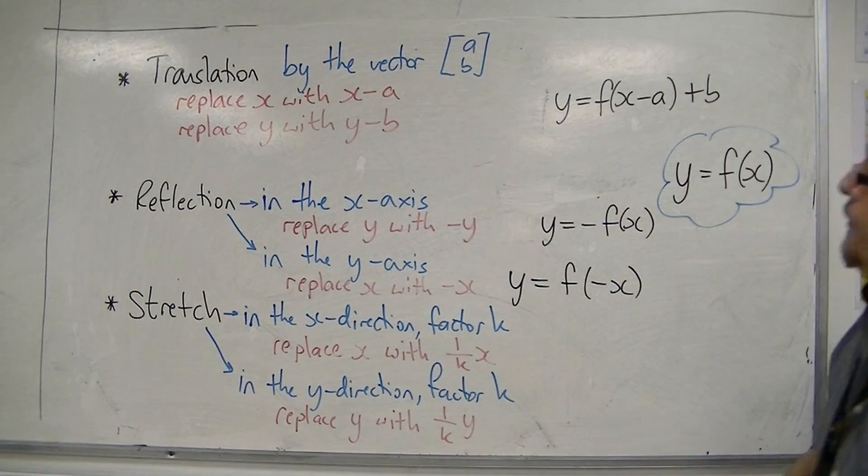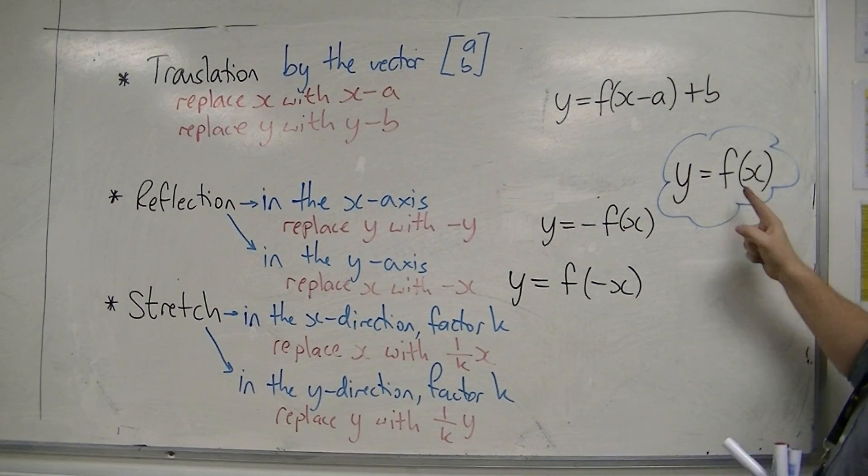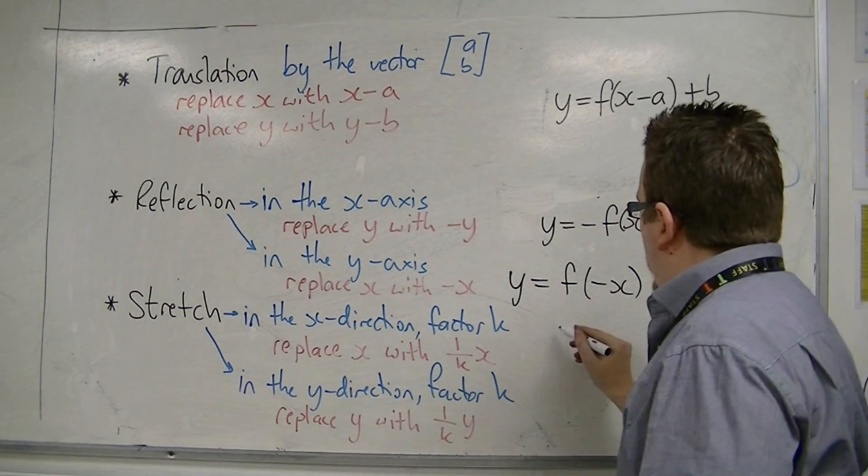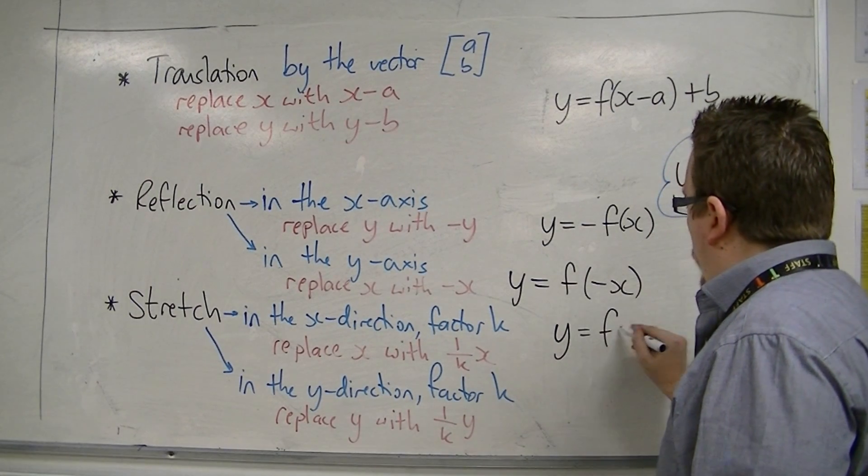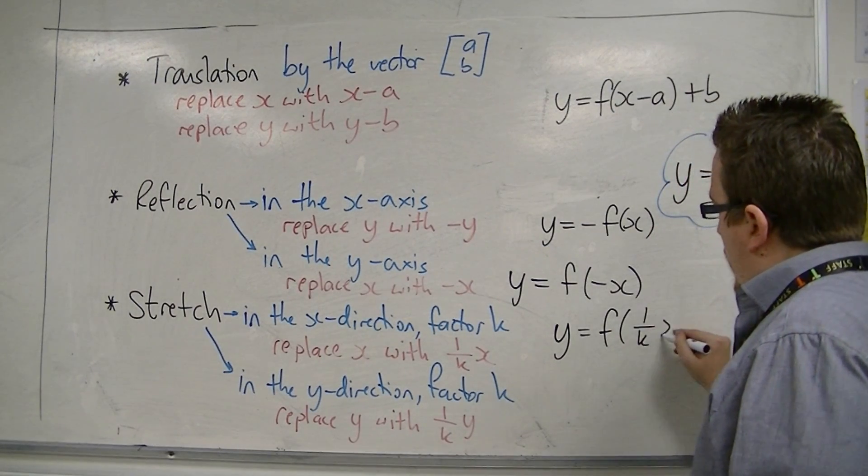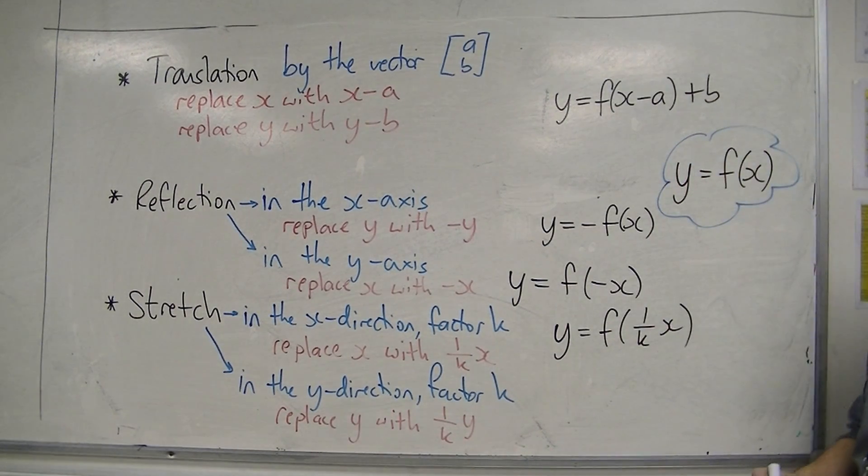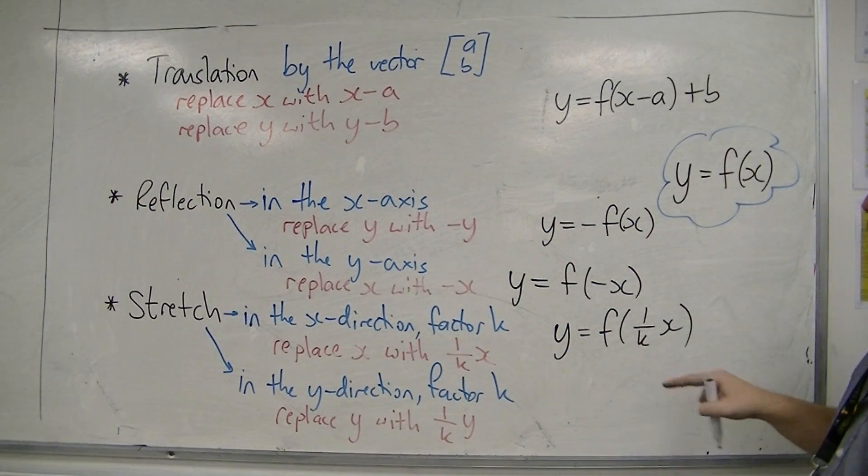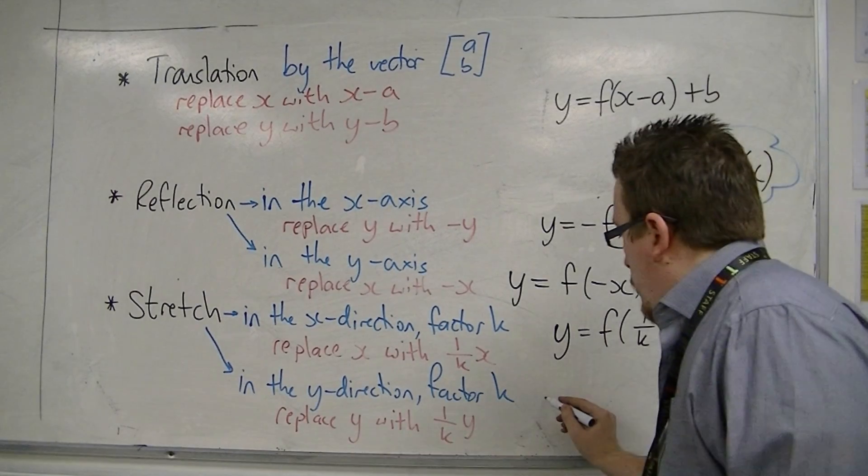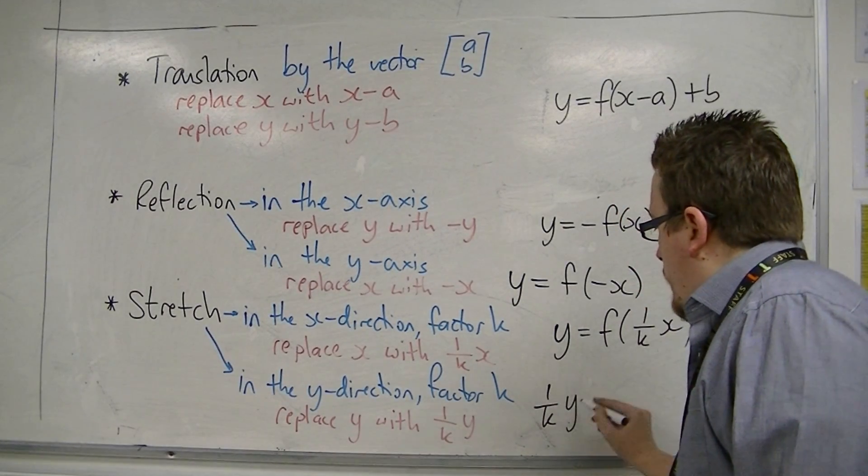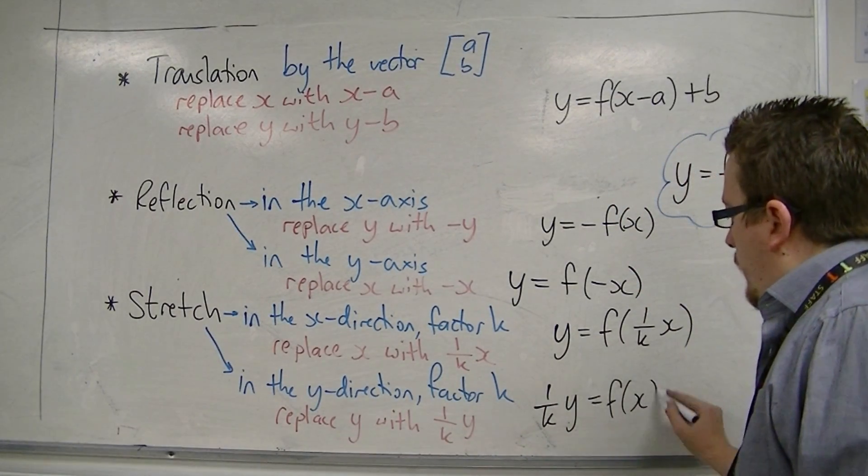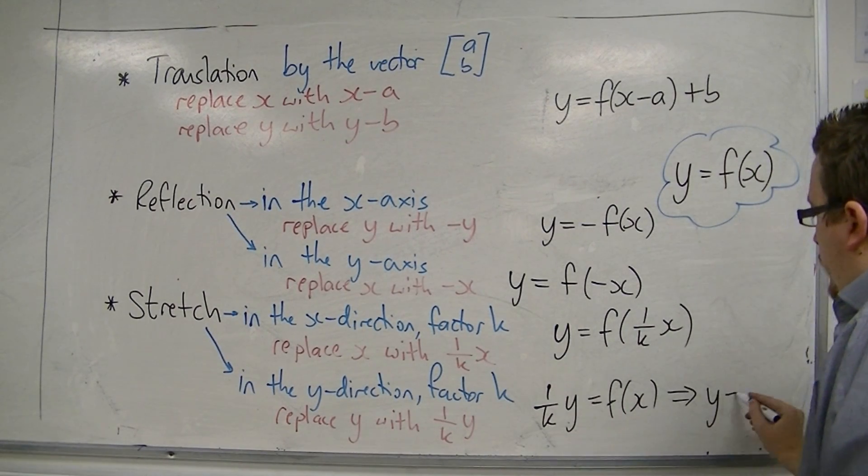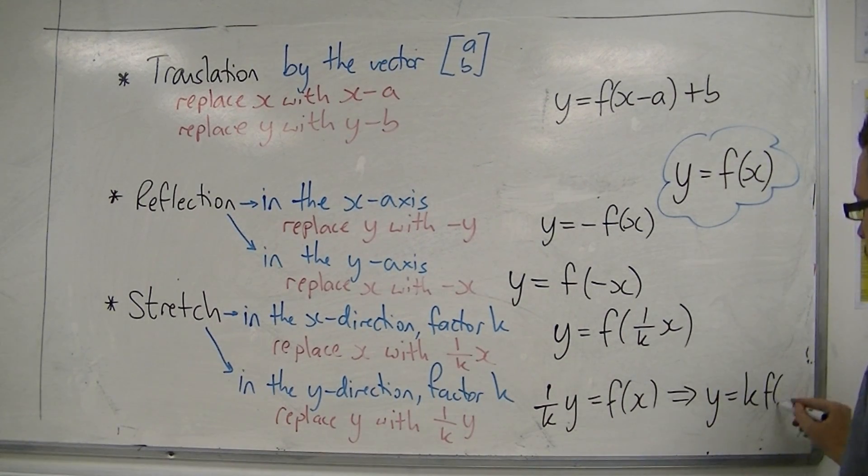So if you start off with y equals f of x, and you replace x with 1 over kx, then this is y is equal to f of 1 over kx. And if you replace the y with 1 over ky, you have 1 over ky is f of x. And if you multiply through by k, then y is equal to k f of x.